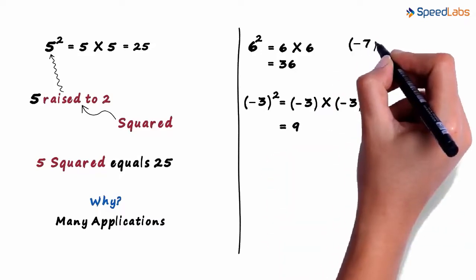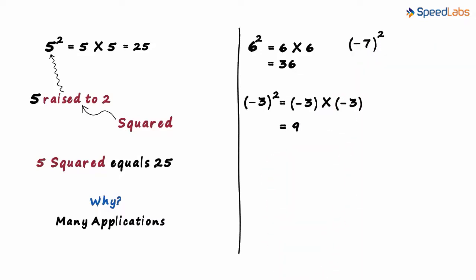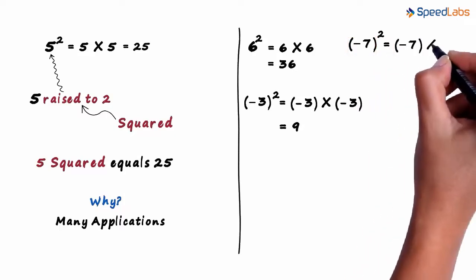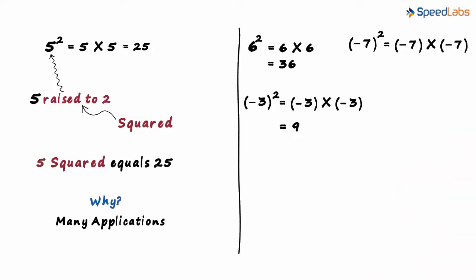What about minus 7 the whole squared? Remember, the whole thing is squared, not just 7. That will equal minus 7 multiplied by minus 7 which equals 49.